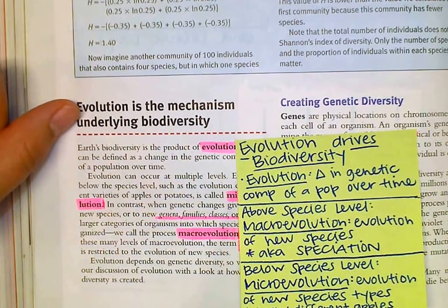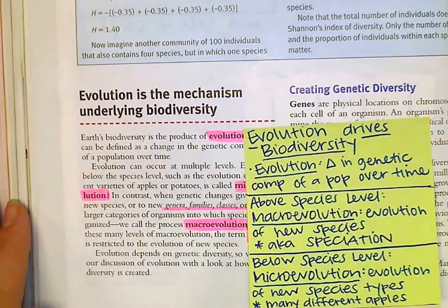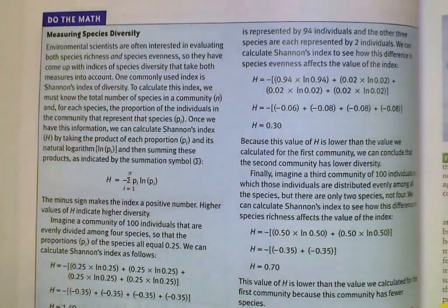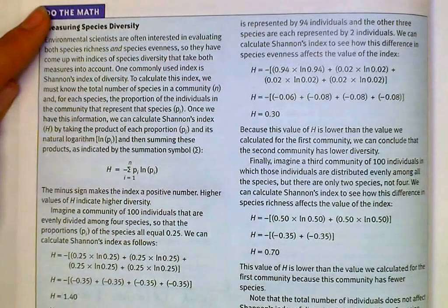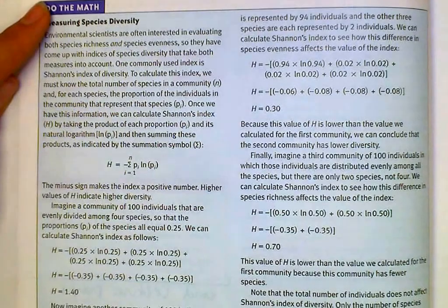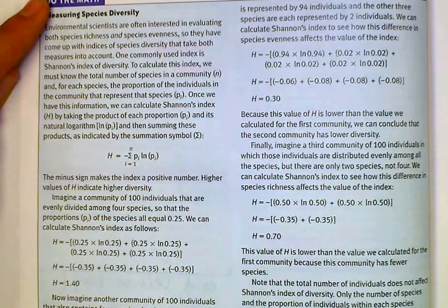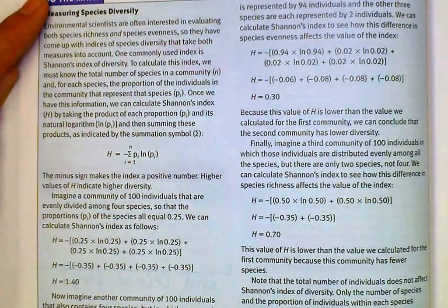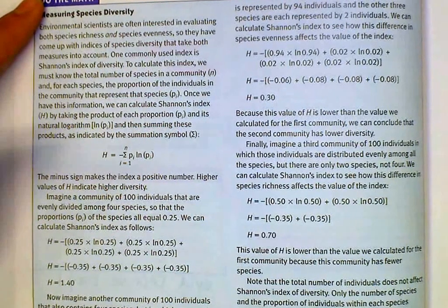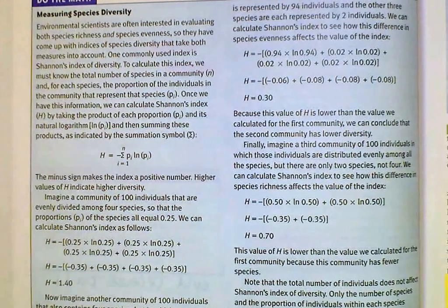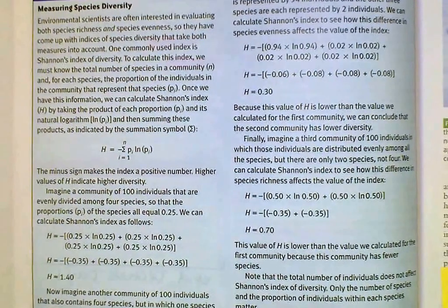Now, if you're still having trouble with your Shannon-Wiener calculations, there's this handy section here called 'Do the Math: Measuring Species Diversity.' So if you're having trouble with that, please feel free to use this box. Also, email me or come visit me in the morning if you're still having trouble.